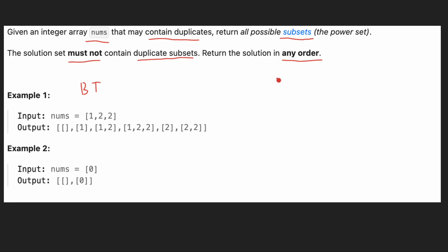Let's see how we are going to generate our tree of solutions. First we are exploring option one, then one and two — we go to the next element, one, two and two. From here there are no more elements in our array, so we are backtracking from this solution.